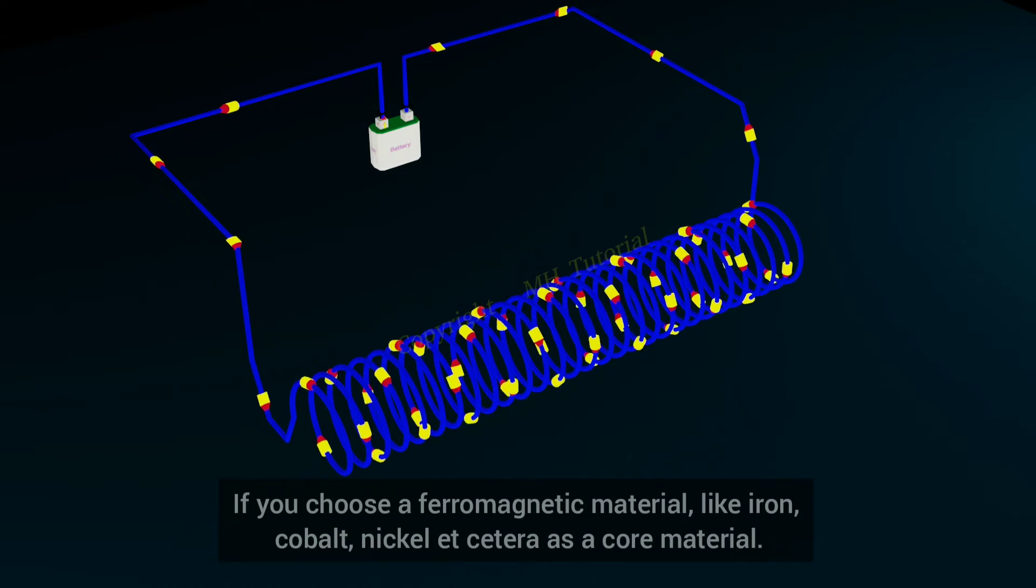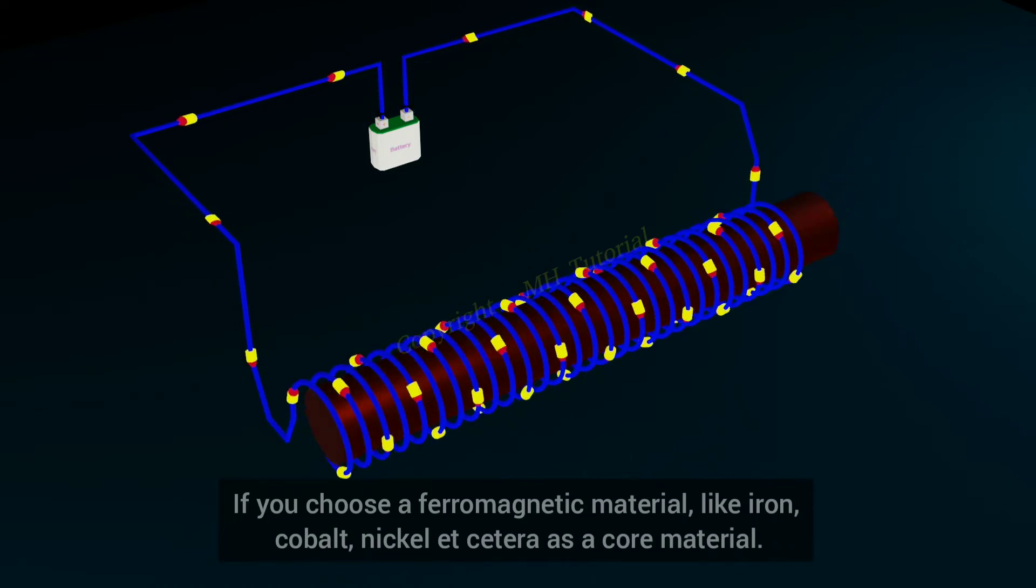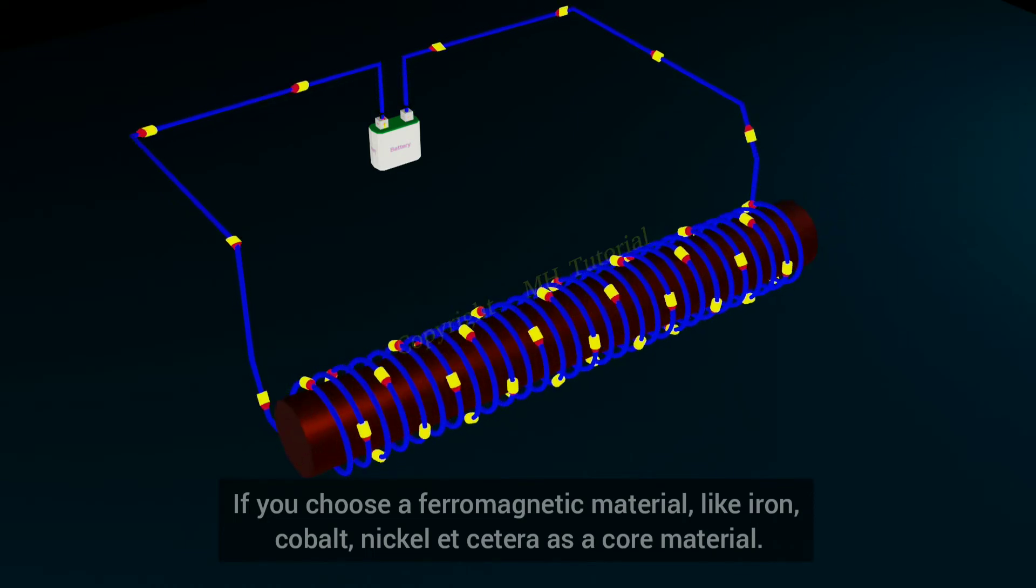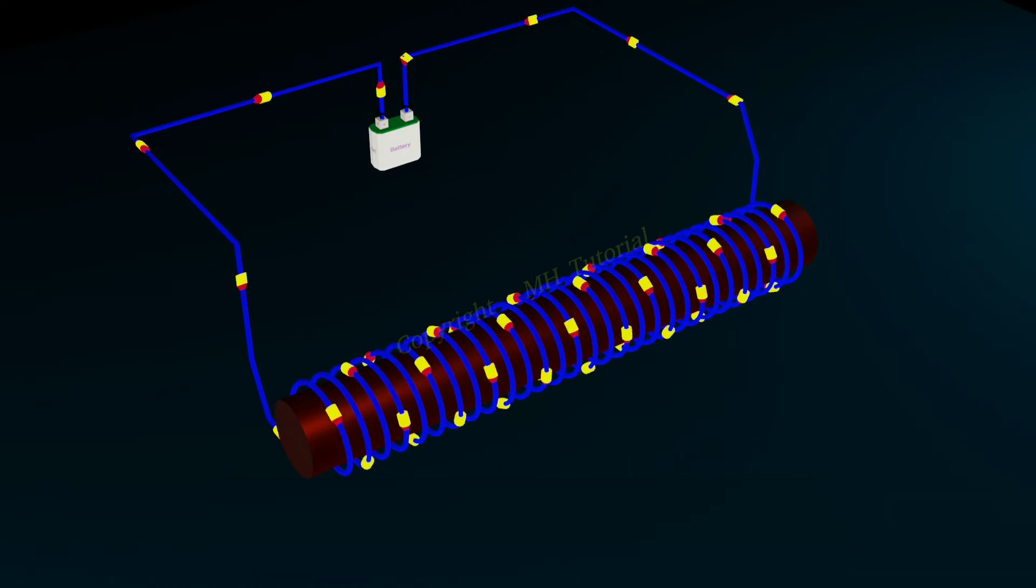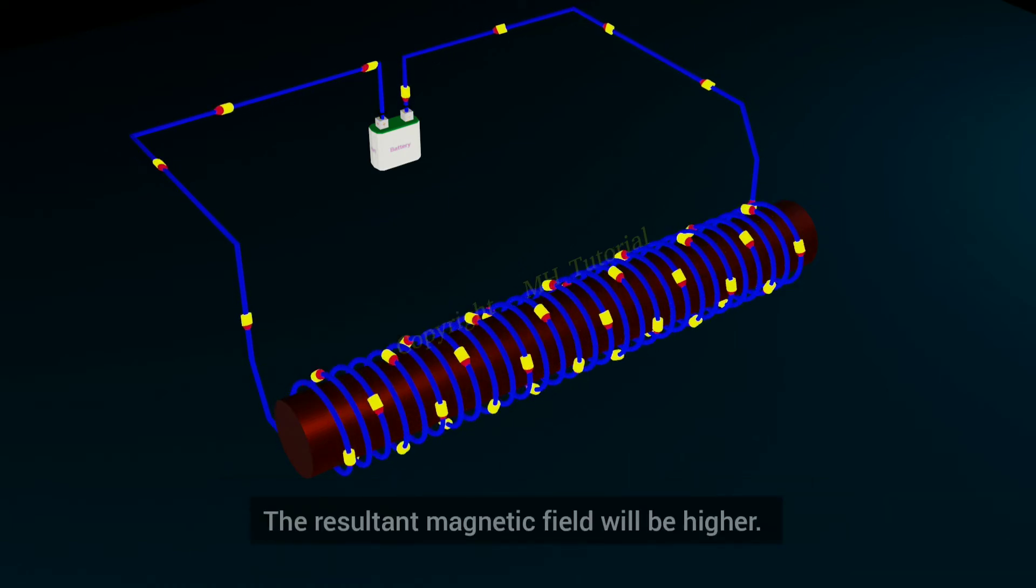If you choose a ferromagnetic material like iron, cobalt, nickel, etc., as a core material, the resultant magnetic field will be higher.